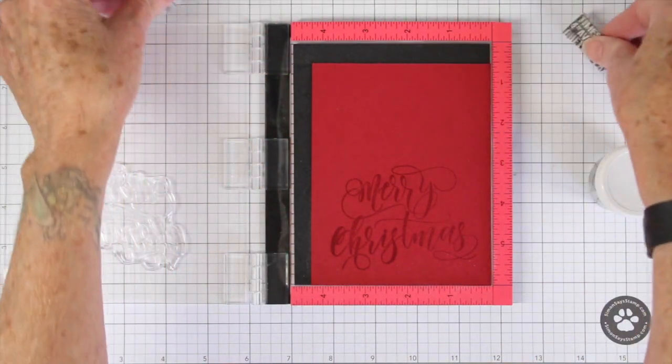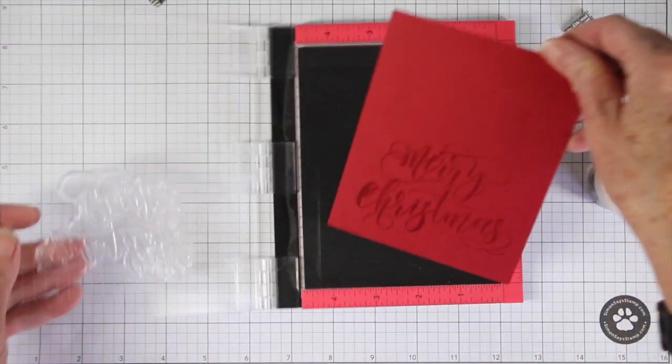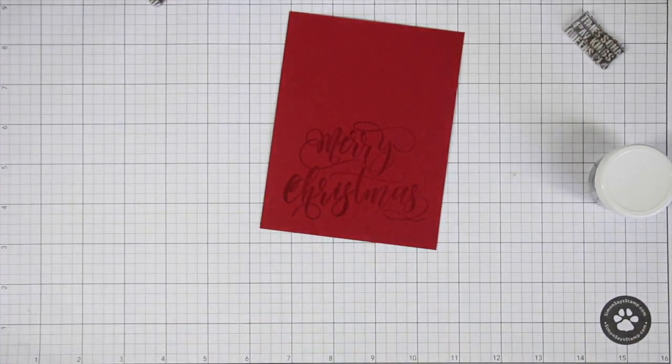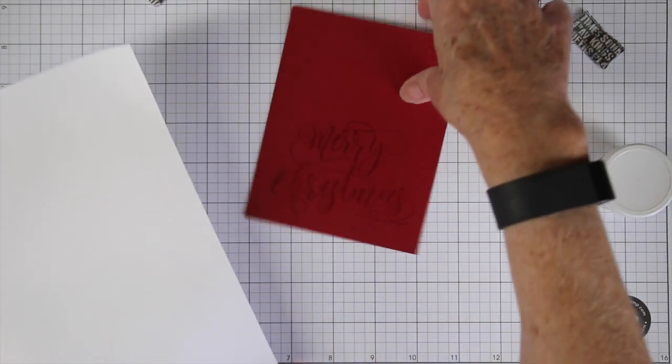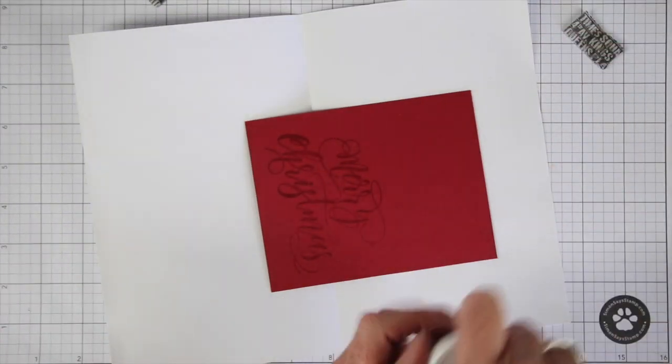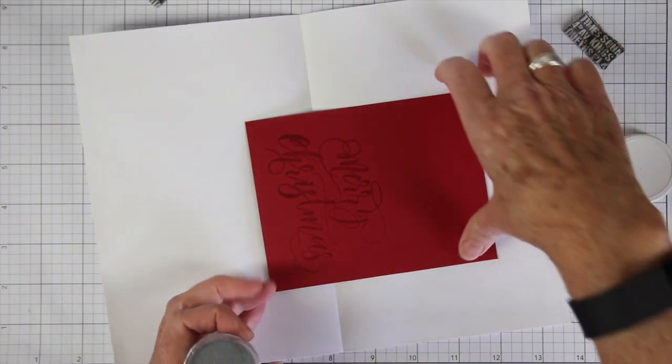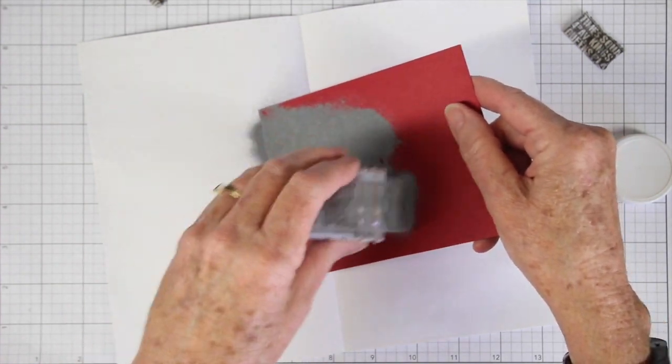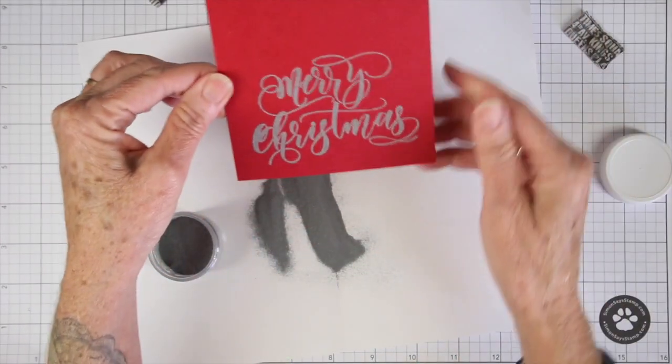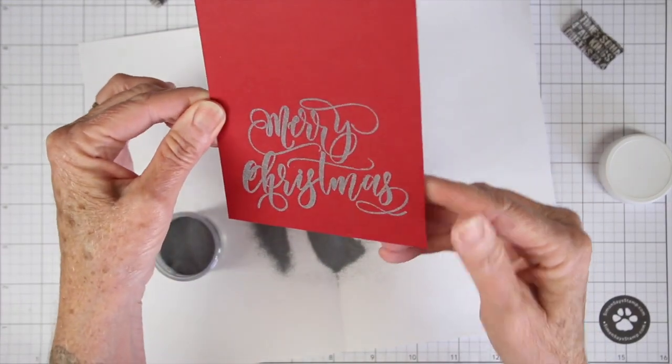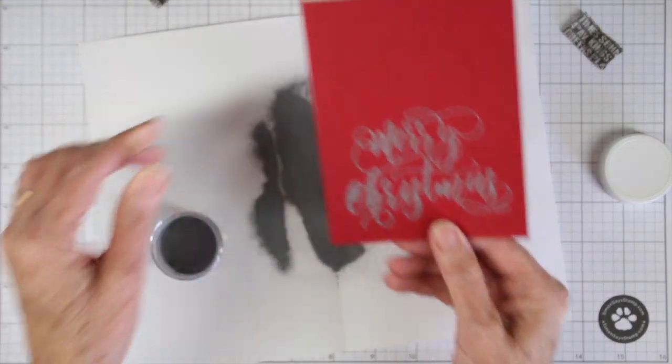I'm going to remove my paper from the Misti and get ready for my silver embossing powder. I don't use silver all the time, so I don't have a container for it, but for my catch I just use a piece of paper folded in half. Now I can pour my embossing powder right onto my cardstock and give this a quick inspection to make sure I don't have any extra embossing powder on there.